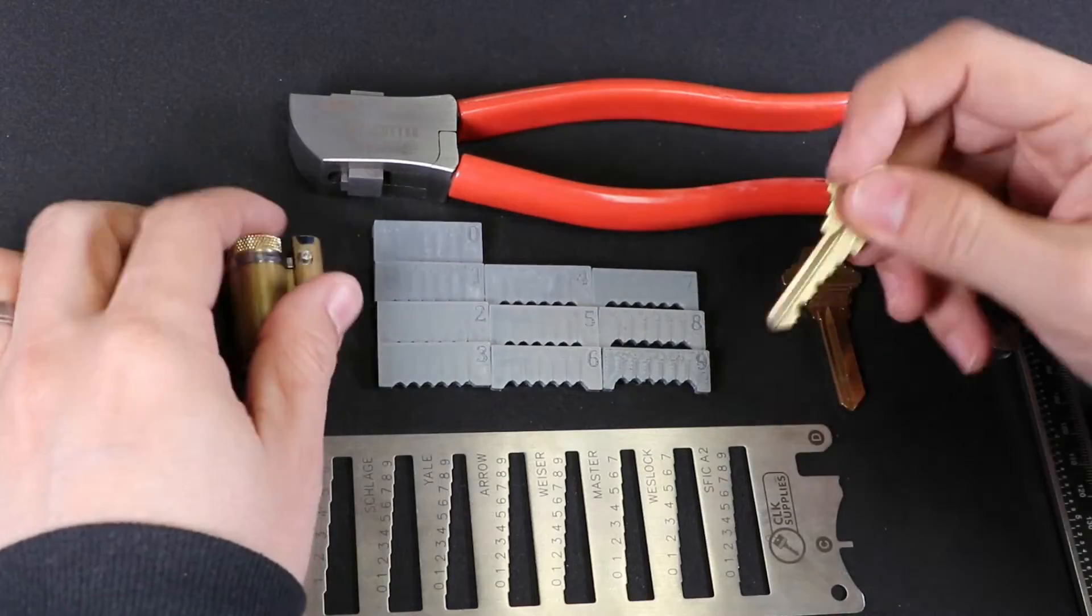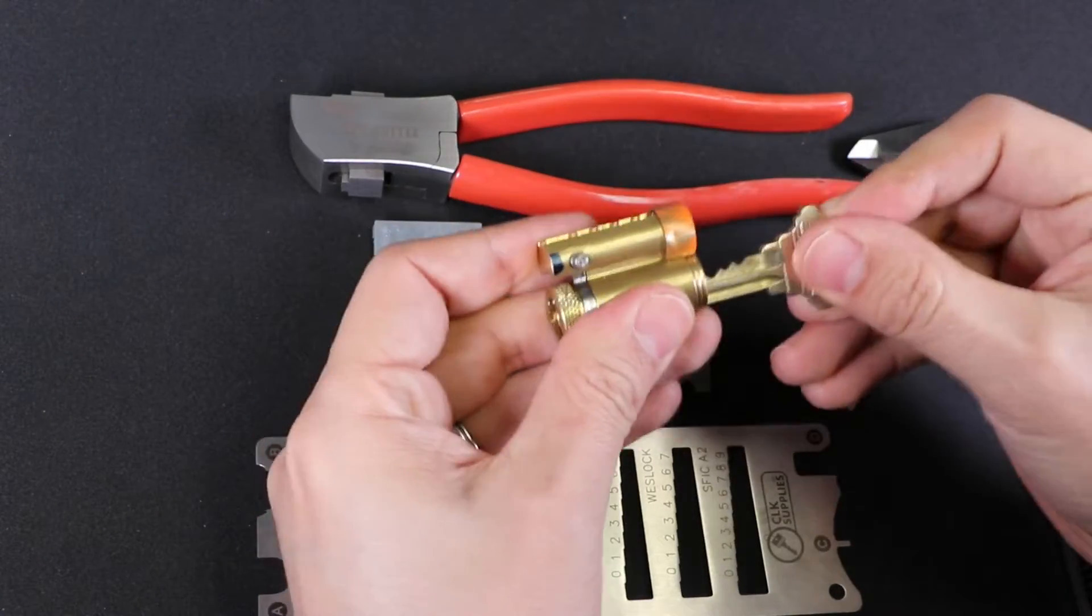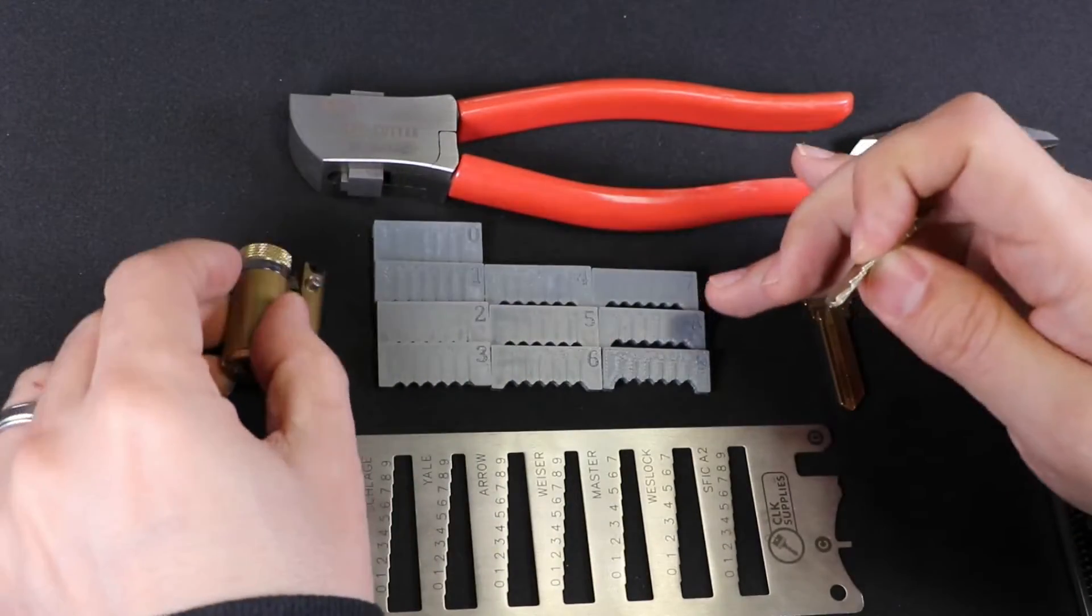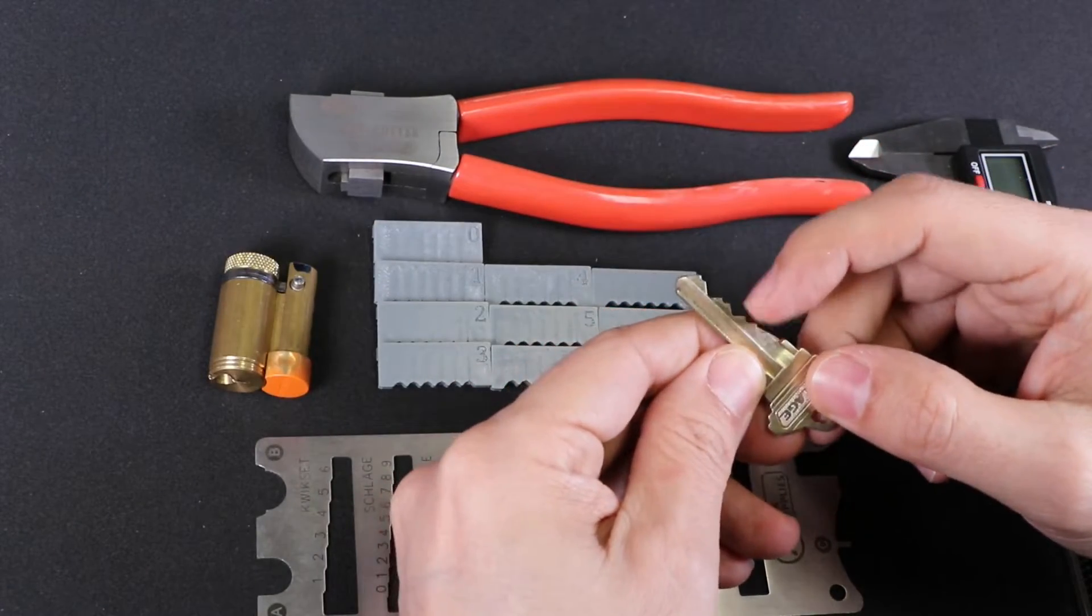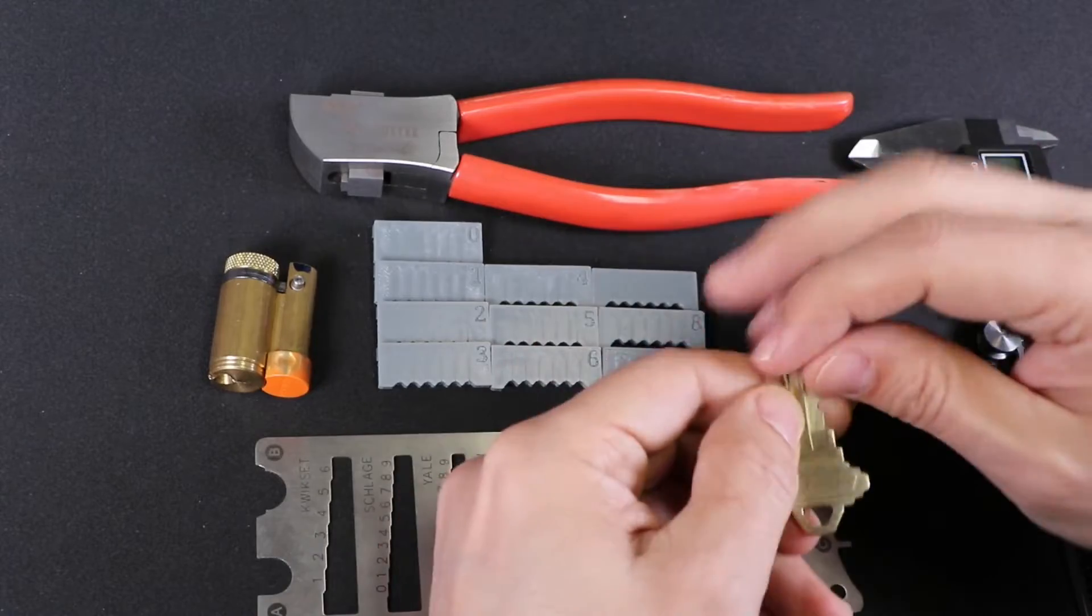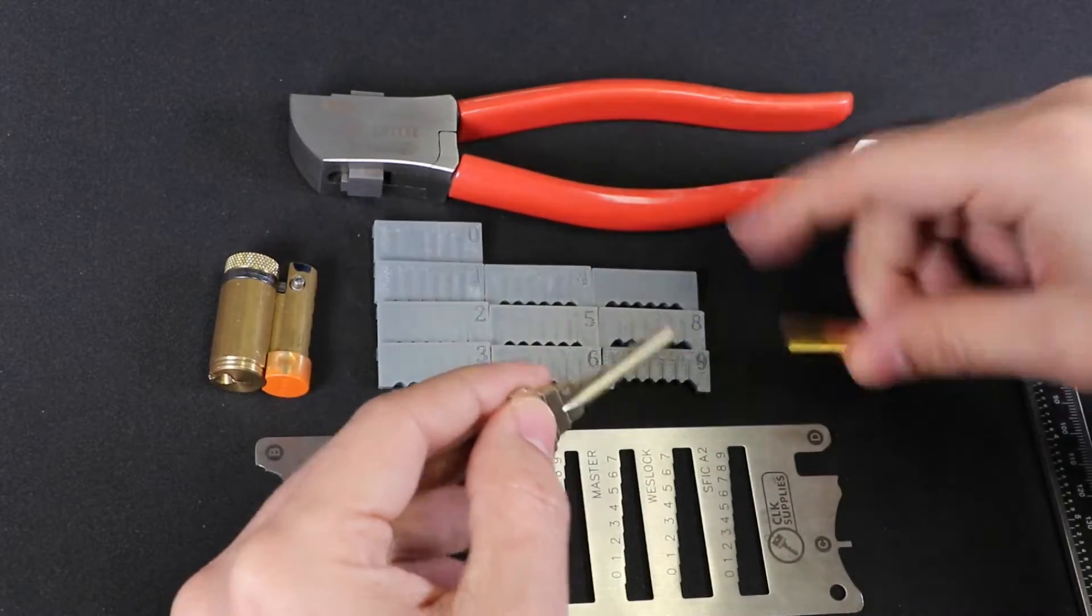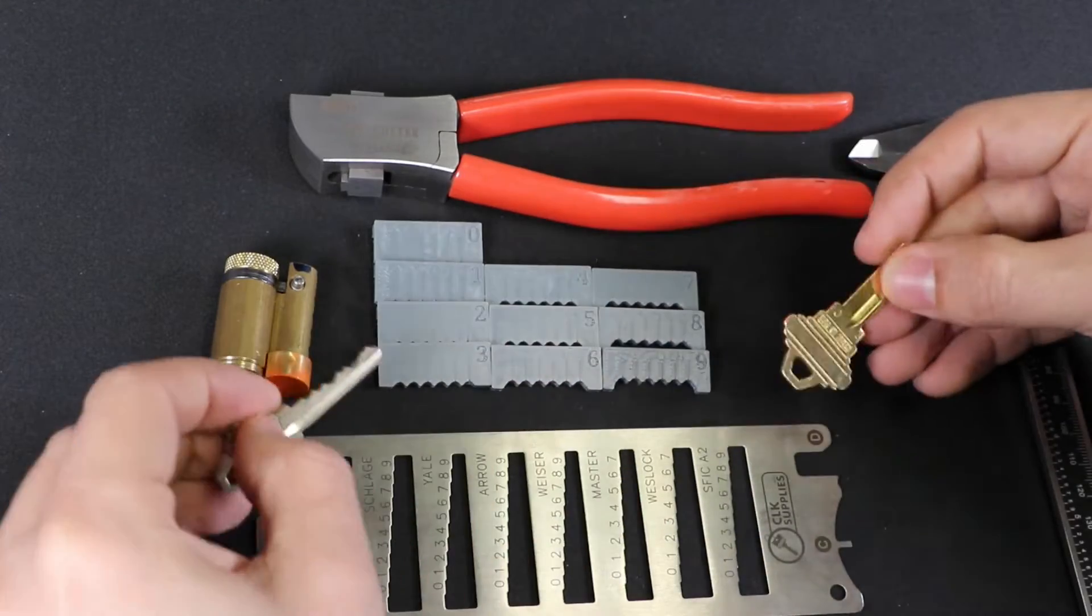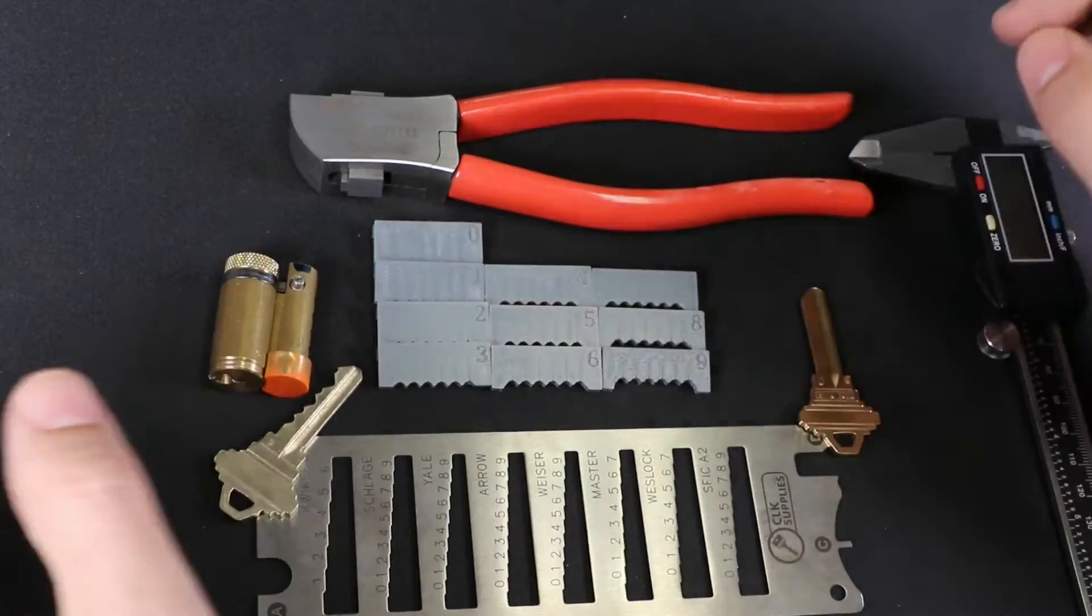So I have a key here. This is a Schlage SC1 key. So I printed out his SC1 kit. It's got a 347593 bidding. And we're going to try to cut that into this key blank here and see how close it gets or if it works or anything like that. I have not tried it at all. Just printed these out.